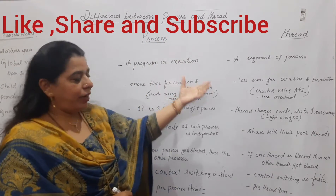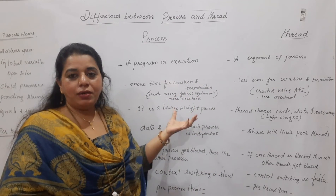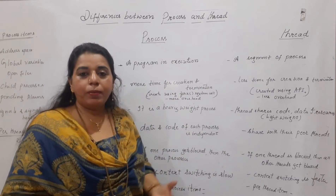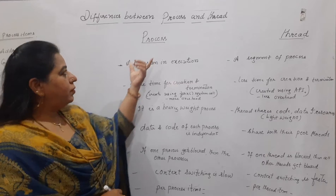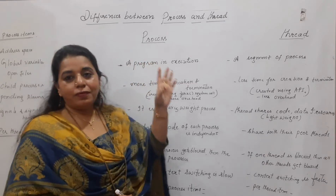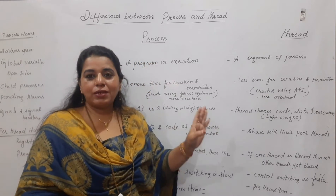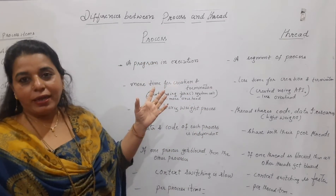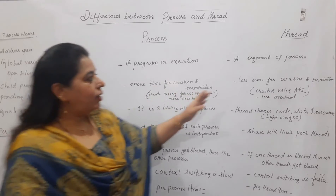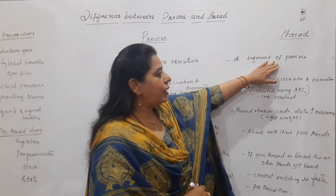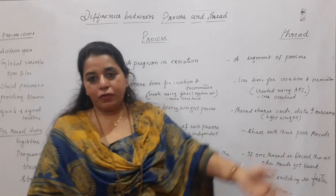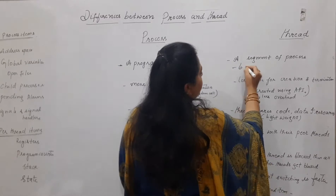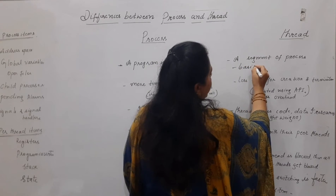I have made two columns here and written the sentences in short; I shall elaborate while explaining. The first difference — the definition: a program in execution is called a process, whereas a thread is a segment of a process, or you can also write: the basic unit of CPU utilization.